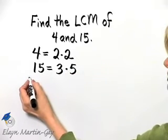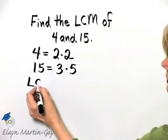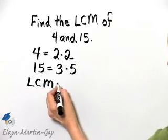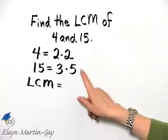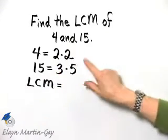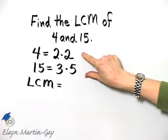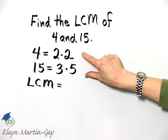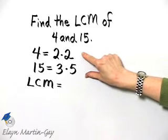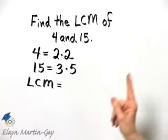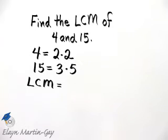And now let's find our least common multiple. We look at all the different prime factors in these two factorizations, and we write down the greatest number of times that each prime factor occurs in any one prime factorization.